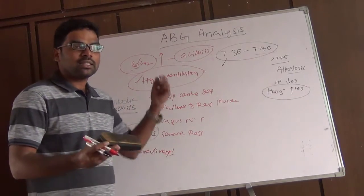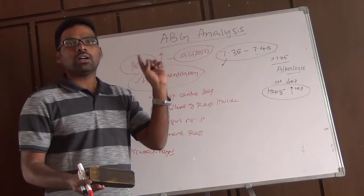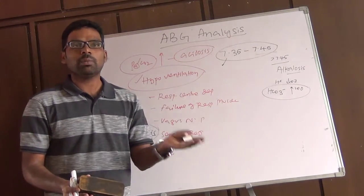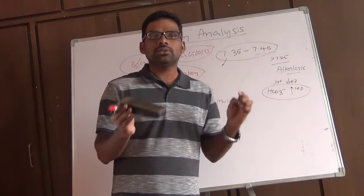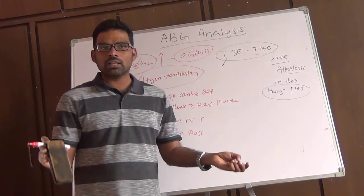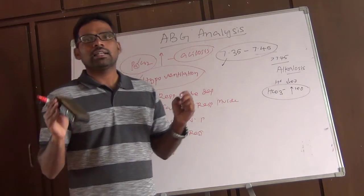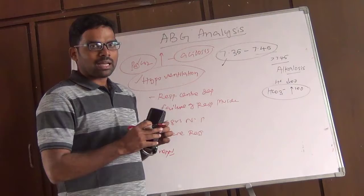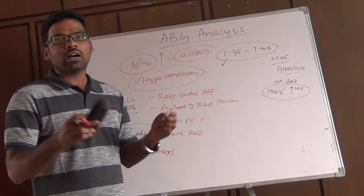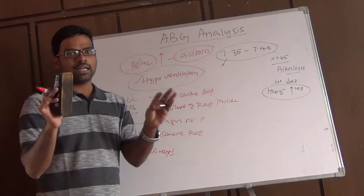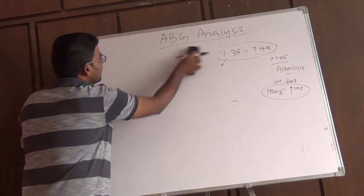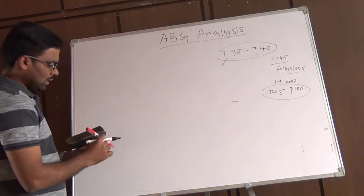If the primary pathology is in the renal system, that is called metabolic acidosis or metabolic alkalosis. To simplify: whenever you see an ABG and bicarbonate concentration is decreasing, that is metabolic acidosis; if PaCO2 is increasing, that is respiratory acidosis. In the further part of the class I will clarify which is primary and which is compensatory.